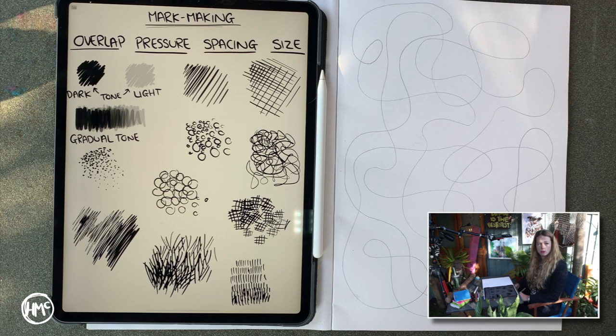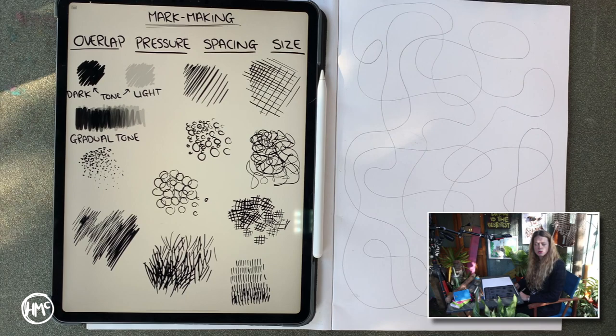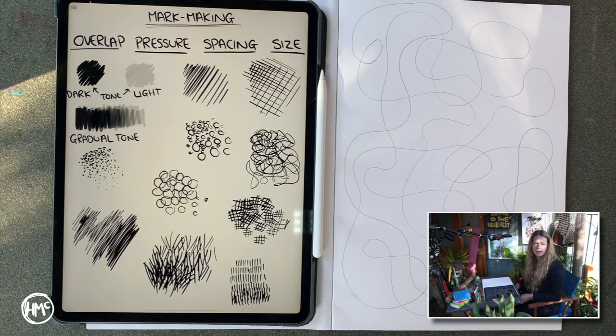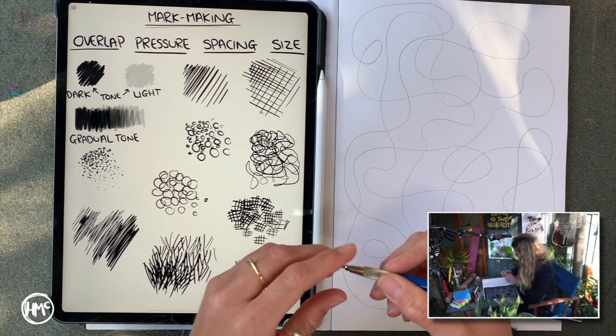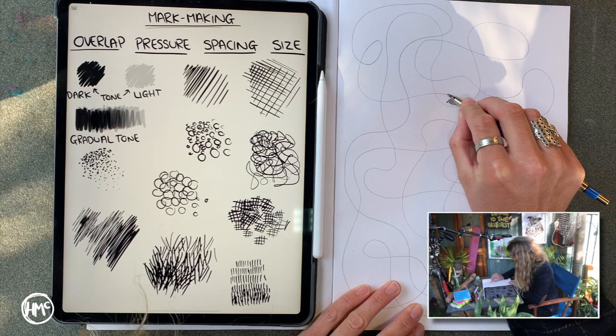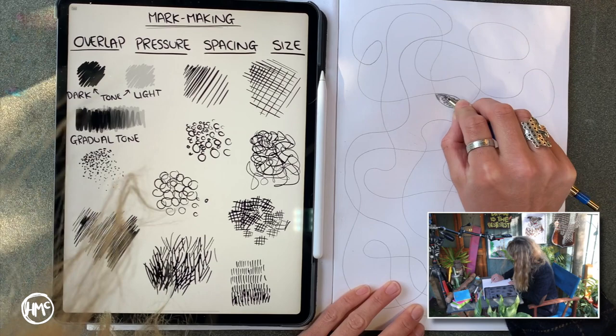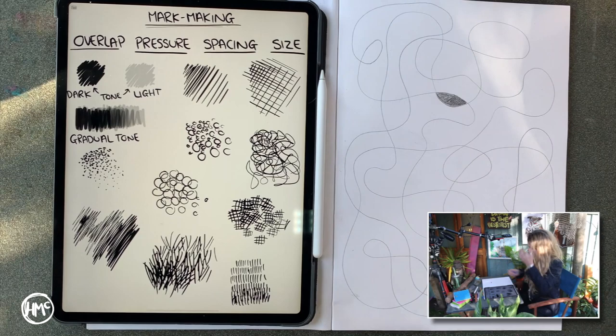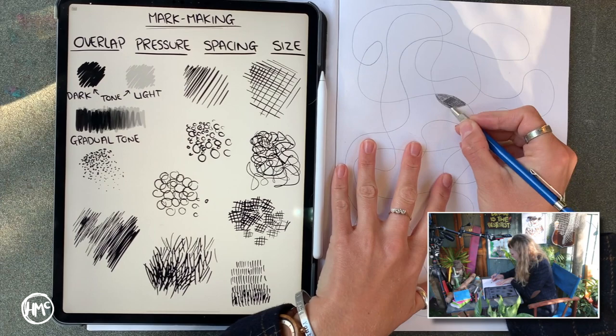Step number two is to practice our tone. I want you to practice your darkest dark that you can get with a HB pencil and your lightest light tone as well. So varying the pressure for this one to get it darker and lighter. So choose a space in which you'd like to do that. I'm going to go for my darkest in this one. I'm going to use the side of my pencil to start with to get it nice and smooth. Trying to keep it as accurately in between those lines as possible. And then I'm going to overlap over the top to get it as dark as I possibly can.